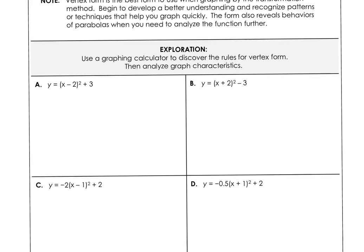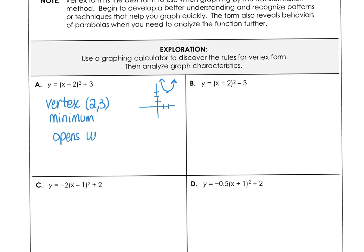In this last example, use a graphing calculator to discover the rules of vertex form and analyze graph characteristics. For (x minus 2) squared plus 3, the graph moves 2 units right and 3 units up, so the vertex is at 2, 3. This is a minimum value, and the parabola opens upward. The domain is all reals, and the range is from 3 inclusive up to infinity.